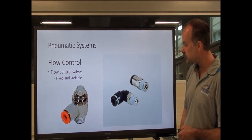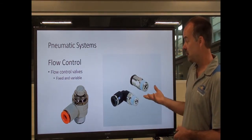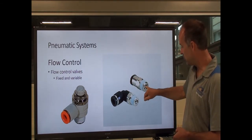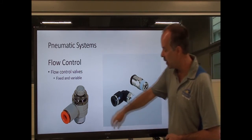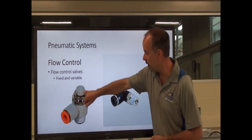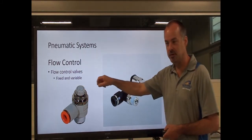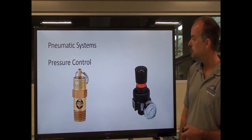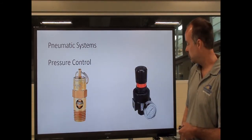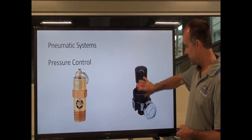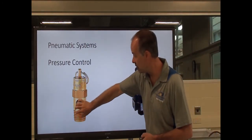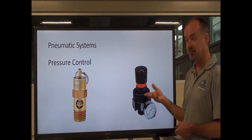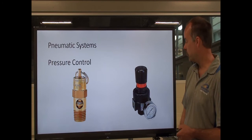Flow control valves — again, we have fixed and variable. A fixed flow control valve just has smaller orifices to restrict the flow. A variable flow control valve has an adjustment you can use to actually adjust the flow of air. Pressure control: we have adjustable regulators, and we have safety valves to protect the components in the pneumatic system from an overpressure situation.